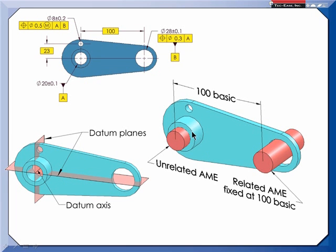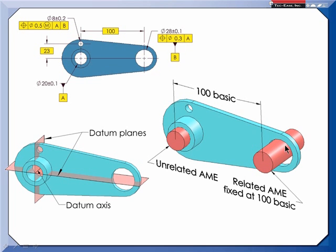Then 100 millimeters from there I would have another gauge element located at the 100 basic, that would expand regardless of material boundary until it fills the hole. When it does that it will probably only hit at one spot — it won't usually fill the hole, and it probably won't even do a very good job of stopping rotation.